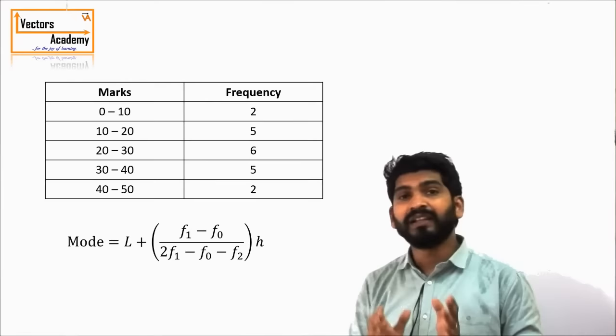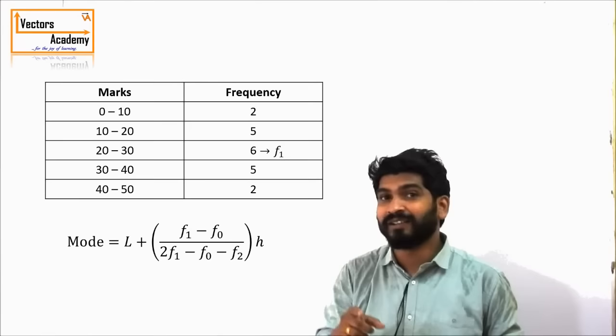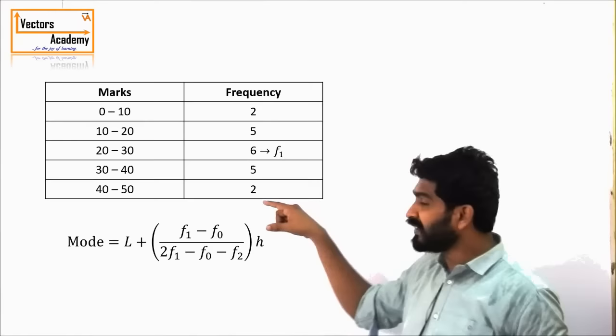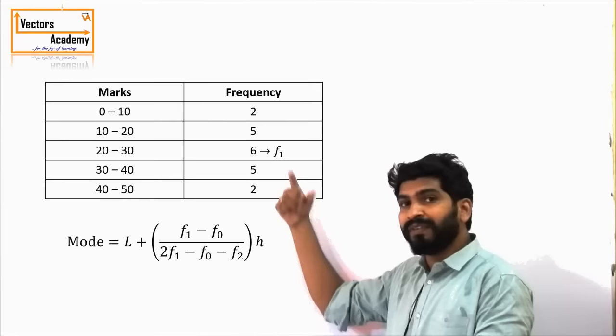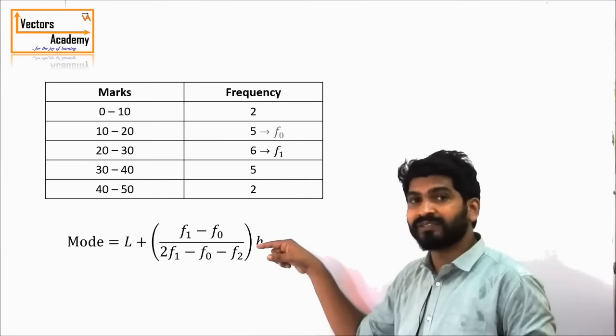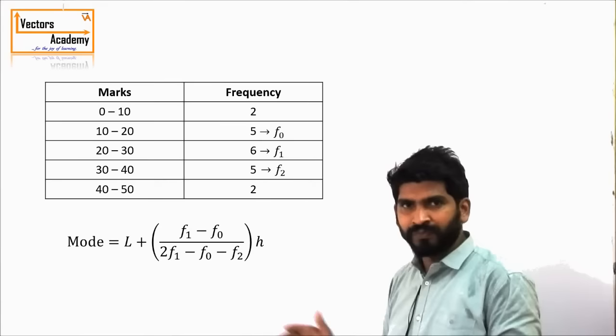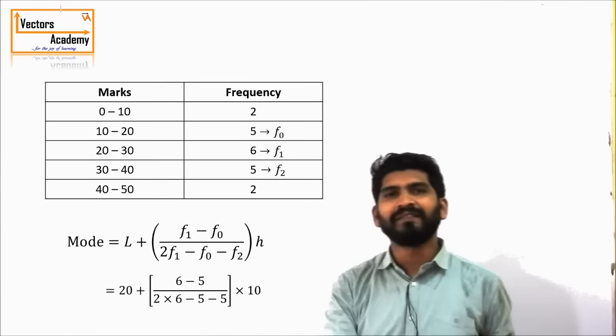F1 is the frequency of the modal class — the class which has the maximum frequency. The class from 20 to 30 is the modal class, and its frequency is termed F1. The frequency of the previous class is F0, and the frequency of the next class after the modal class is F2. H is the class width, which is 10. Just substitute the values and we get the answer for the mode.